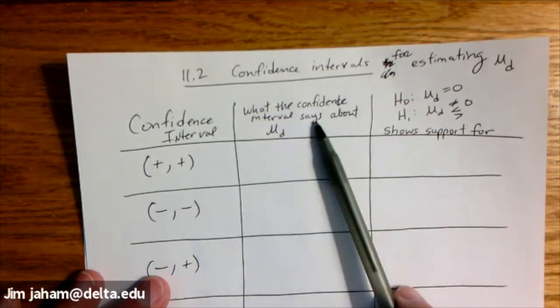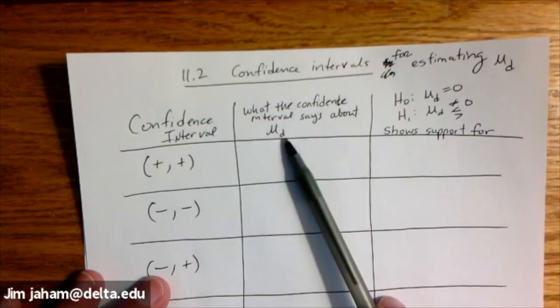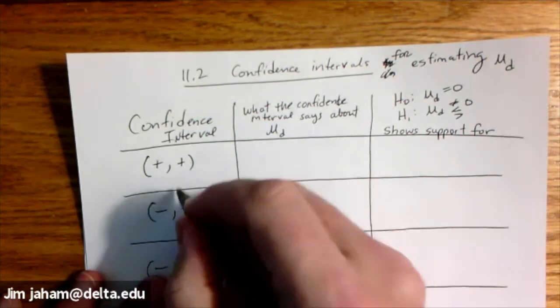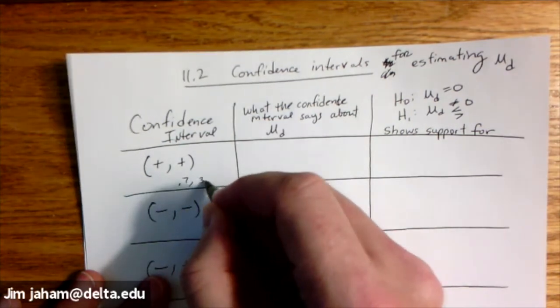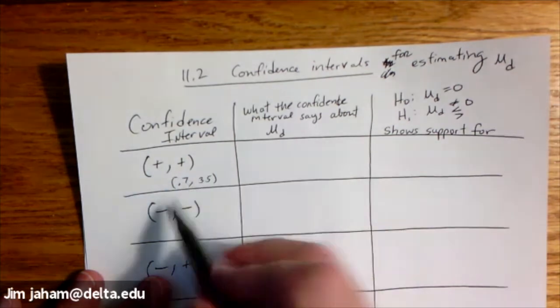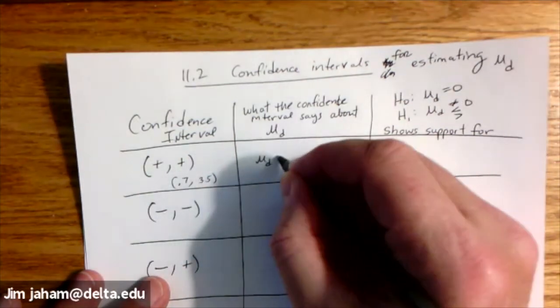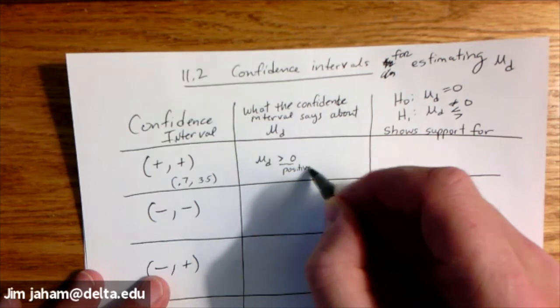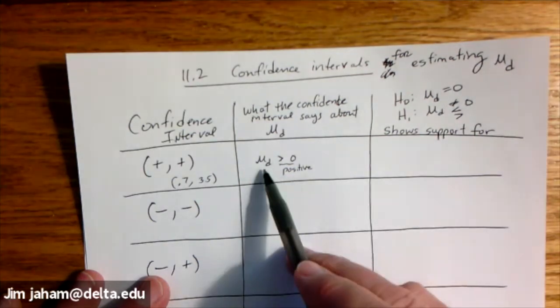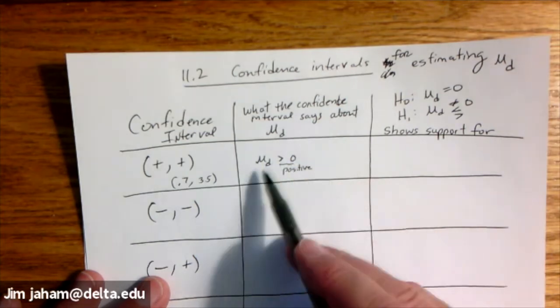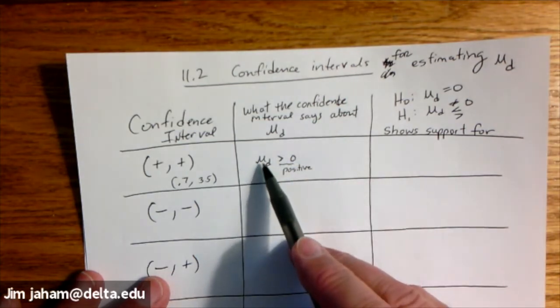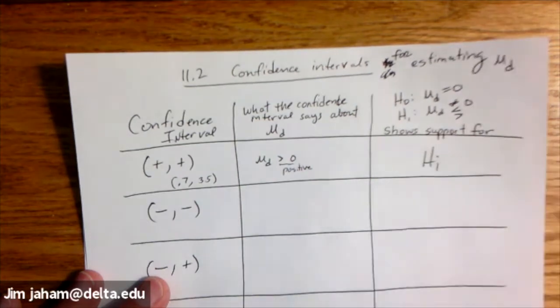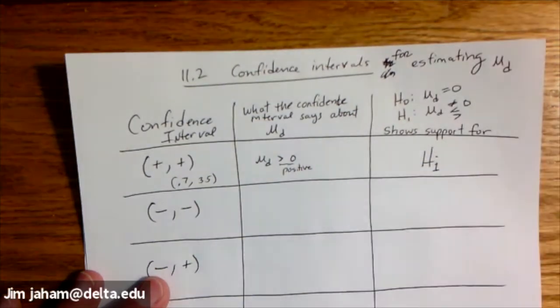Since we're estimating the mean of the differences, if the mean of the differences has a confidence interval that looks like 0.7 up to 3.5, it doesn't matter what these numbers are as long as they're positive. Then this is saying that the mean of the differences is greater than zero, and that means positive. And if the confidence interval gives evidence that the mean of the differences is positive because of the two positive numbers, that would be support for H1, the alternative.